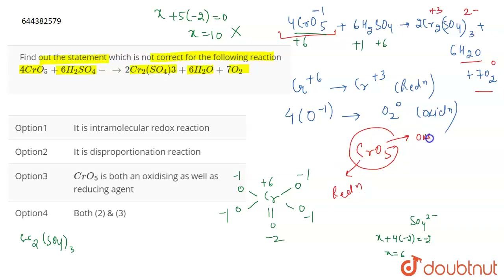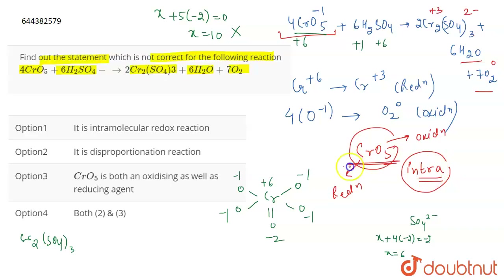However, this is not a disproportionation reaction. It is an intramolecular redox reaction, meaning within the same molecule, CrO5, chromium is undergoing reduction and oxygen is undergoing oxidation. That is the key distinction.